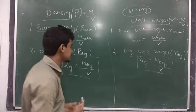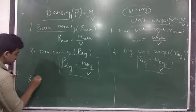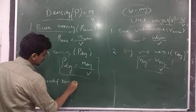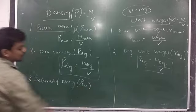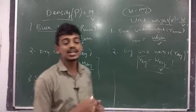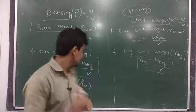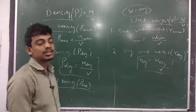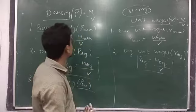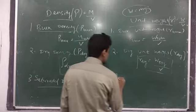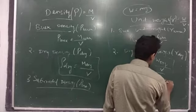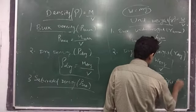Next is saturated density, written as rho sat. If the soil mass is totally saturated, then bulk density is called saturated density. If the soil mass is completely saturated, air will not be there, so saturated density is the same as bulk density — there is no difference. Similarly, saturated unit weight has no difference from bulk unit weight when the soil is fully saturated.